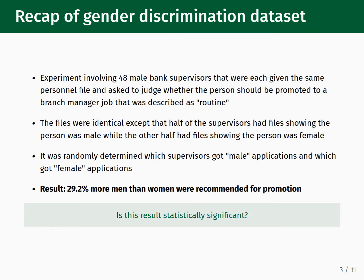Let's recap the details of the gender discrimination experiment. The study involved 48 male bank supervisors each given the same personnel file and asked to judge whether the person should be promoted to a branch manager job described as routine. The files were identical except that half showed the person as male and the other half as female. It was randomly determined which supervisors got which files. The key result was that 29.2% more men than women were recommended for promotion.